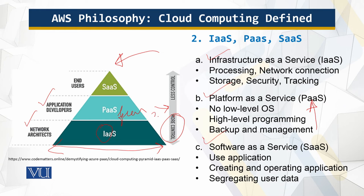Software as a service is at an even higher rung on the evolutionary ladder. All application functionality is delivered over a network in a package — the user need do nothing more than use the application. The provider deals with the hassle of creating and operating the application. There is less control, fewer end users, and this is how the three service types are stacked and interrelated.